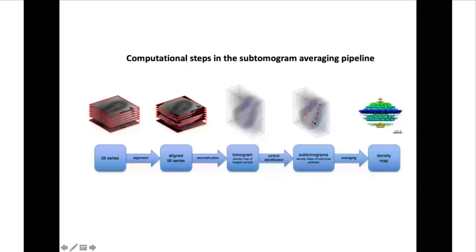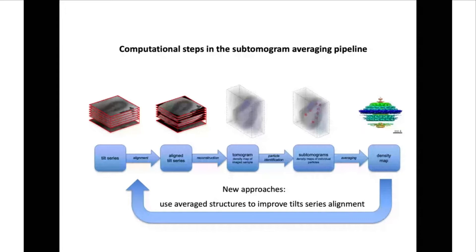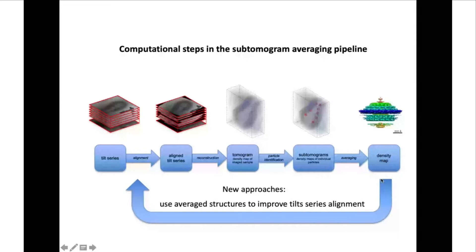This is probably a workflow we are all familiar with to some extent. There are also new approaches emerging in which we take the density map obtained in this first iteration and use this new information to realign the tilt series for a finer alignment. One can also use information from an orthogonal classification — there are many variants — but all of them are articulated along this general pipeline.